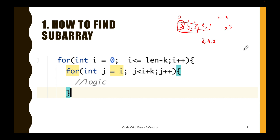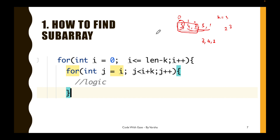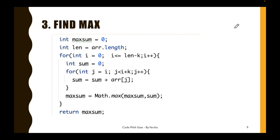We initialize a sum variable and inside the inner loop we add elements at each j index — for example, 3+4+2 = 9. We store that in sum. Then we compute the maximum: after the first subarray sum is 9, the second [4,2,5] gives 11, so max updates from 9 to 11. The third [2,5,1] gives 8, so 11 stays. We return the maximum, which is 11.